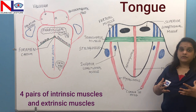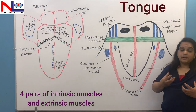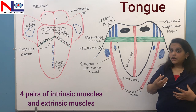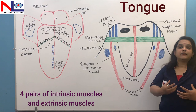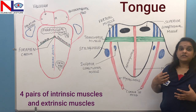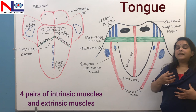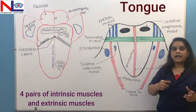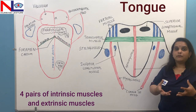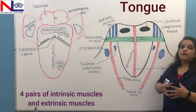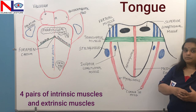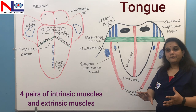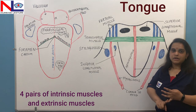Intrinsic muscle fibers are mainly responsible for changing the shape of the tongue. As in speech, the tongue is changing its shape, which is why we are able to speak. Extrinsic muscles are mainly responsible for changing the position of the tongue — moving it right, left, pulling it out, retracting, depressing. Intrinsic muscle fibers originate in the connective tissue of the tongue and insert in the connective tissue itself, whereas extrinsic muscles originate in the bones outside the tongue and insert in the tongue.